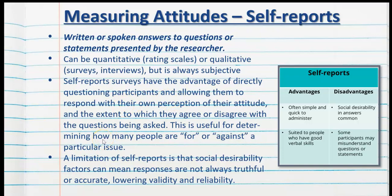A limitation of self-reports, however, is that social desirability factors mean responses are not always truthful or accurate, which lowers validity and reliability. Social desirability is extremely common — people give the answers they think the researcher wants to hear or what's the popular social opinion at the time, even though their actual attitude may be the complete opposite. Additionally, some participants may misunderstand questions or statements that are not worded well, which also leads to lowered validity and reliability.